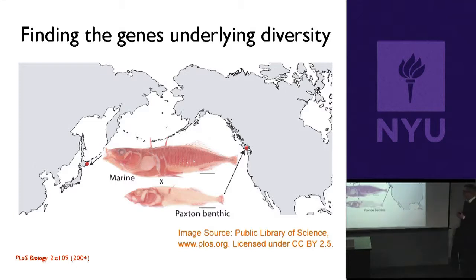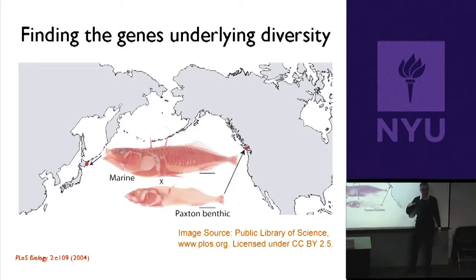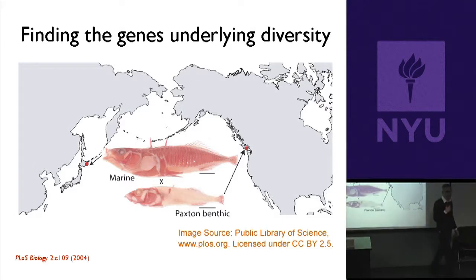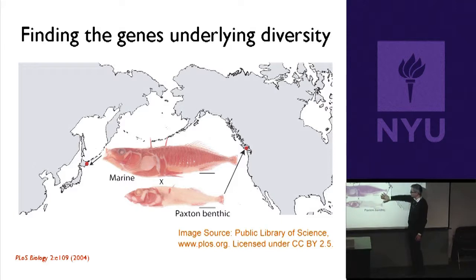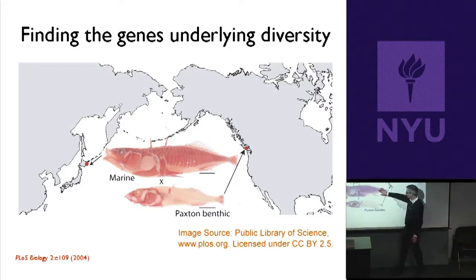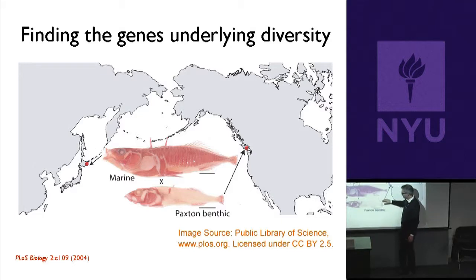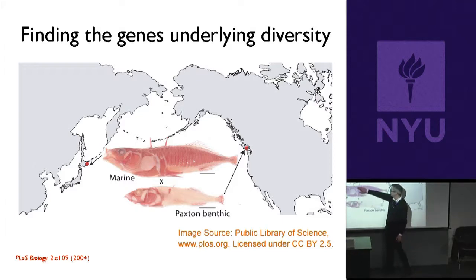These are members of the same species, so you can do genetics on them—you can cross them to each other. By crossing them, you can identify genes causing these differences. We're going to talk about that more when we discuss plant breeding. But for now, recognize that because we can do crosses we can identify genes. There are a number of labs interested in finding the genes responsible for the loss of armor, the loss of spines, and so on.